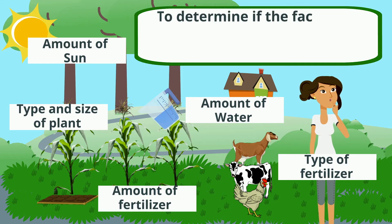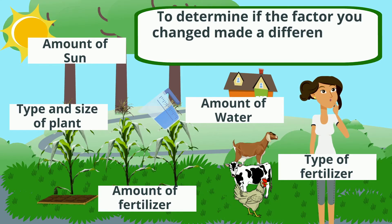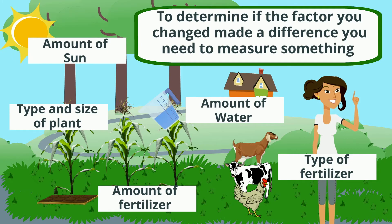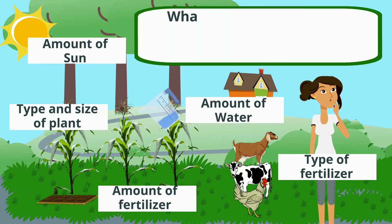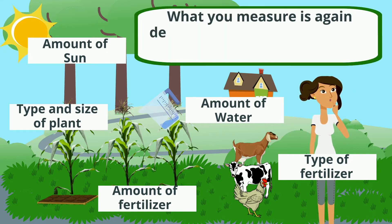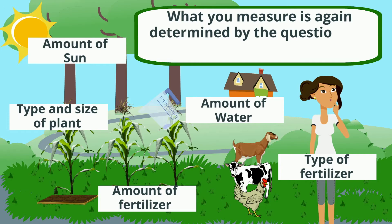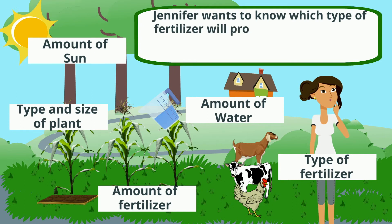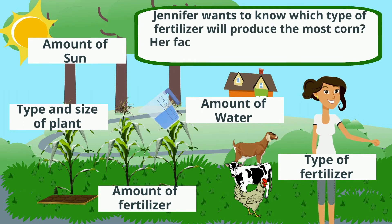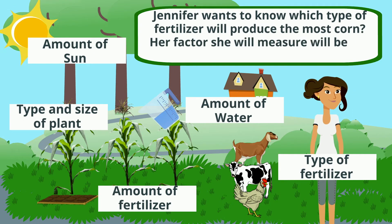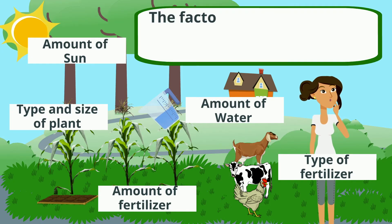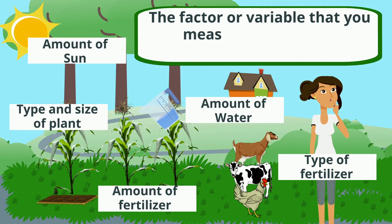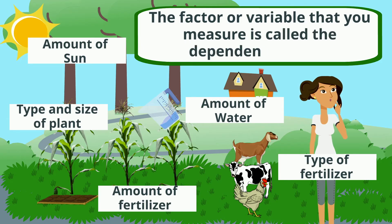To determine if the factor you changed made a difference, you need to measure something. What you measure is again determined by the question you are asking. Since Jennifer wants to know which type of fertilizer will produce the most corn, the factor she will measure will be the amount of corn. The factor or variable that you measure is called the dependent variable.